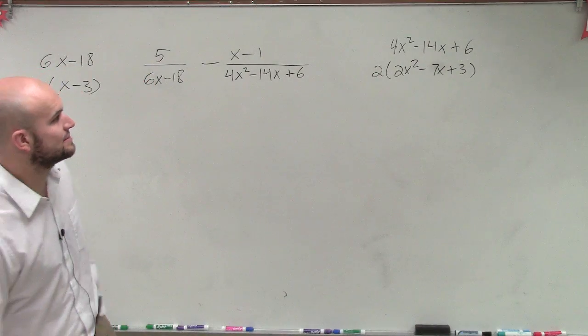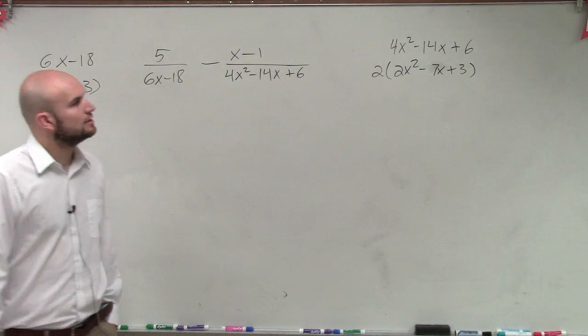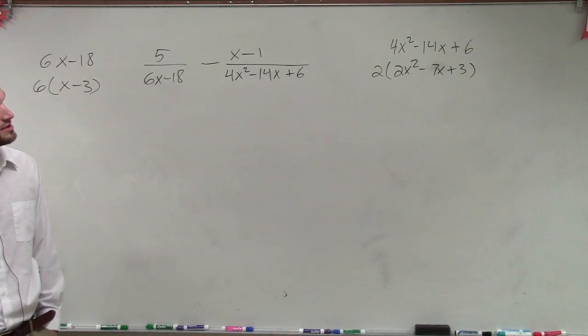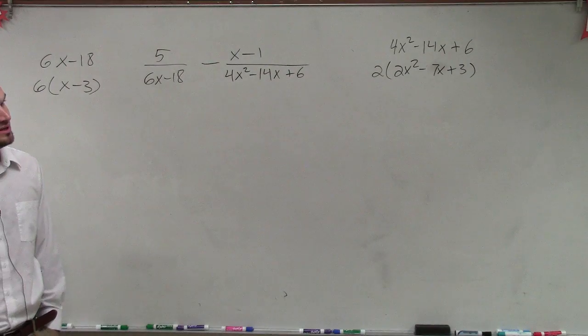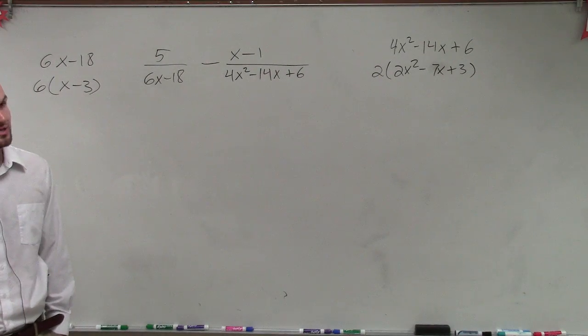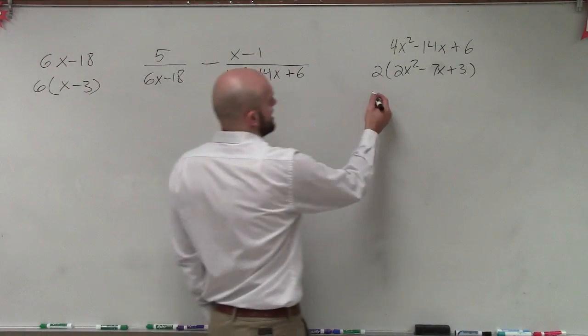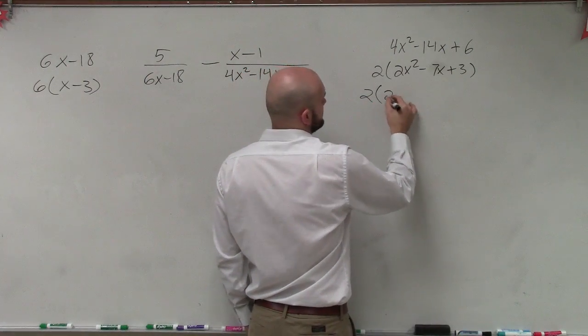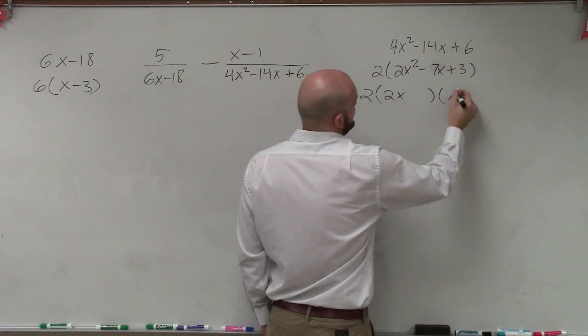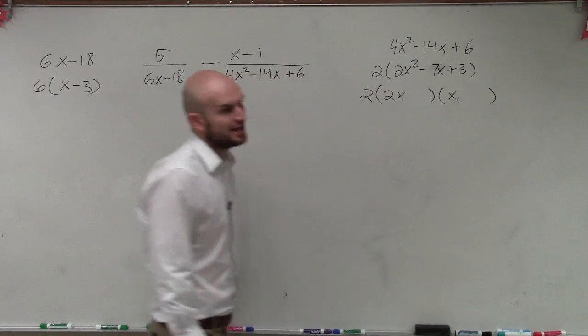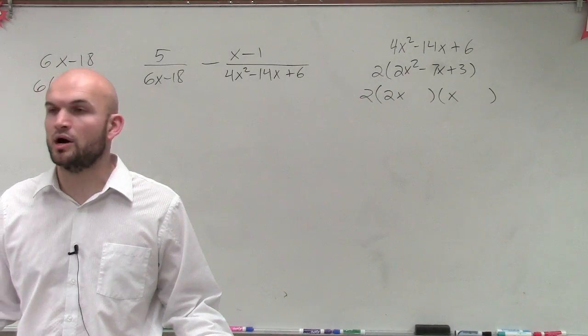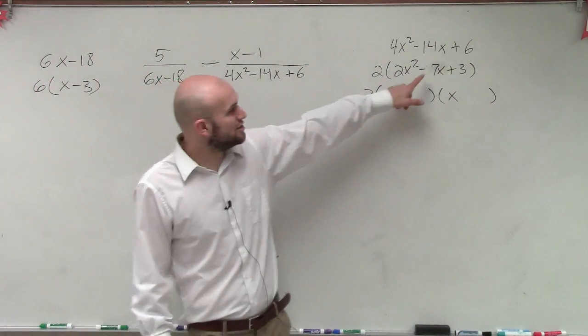So now, what I can do is say what two numbers multiply to give me positive 3. If I know this is 2x, then I know that this has to be 2x and this has to be x. So now I need to figure out what two numbers multiply to give me 3. It's either plus 3 and 1, or negative 3 and negative 1. But since I know that this is a negative middle term, I know that two factors have to be negative 3 and negative 1.